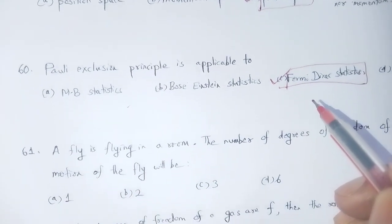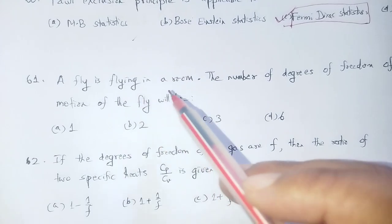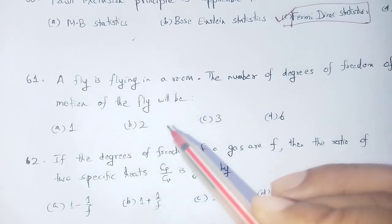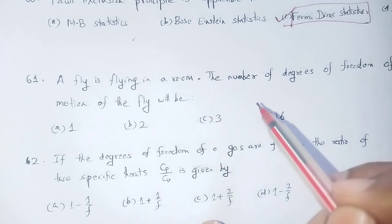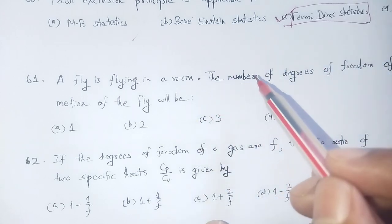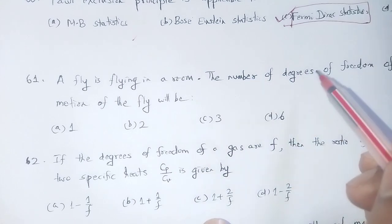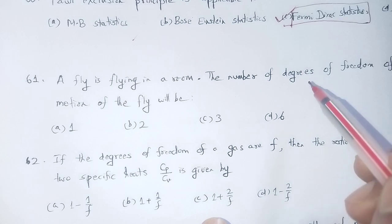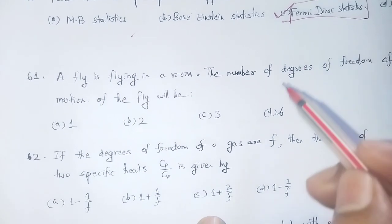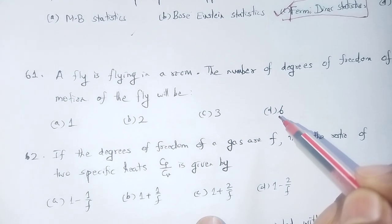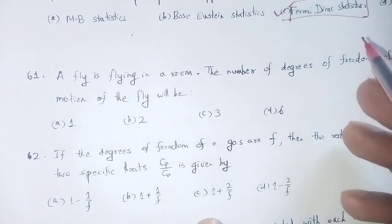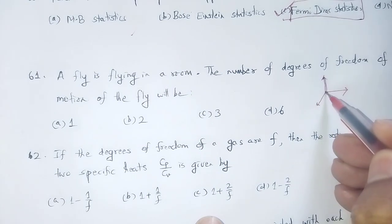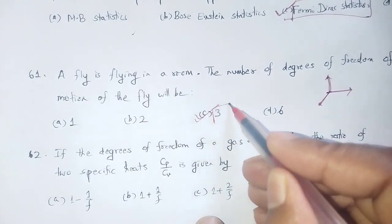Question 59: A fly is flying in a room. The number of degrees of freedom of motion of the fly will be? In three-dimensional space, the fly has 3 translational and 3 rotational degrees of freedom, giving 3 × 2 = 6 degrees of freedom. Option number 3: six.